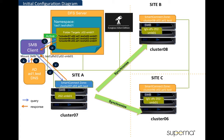Site A is the primary site. Site B and C are both secondary sites. There are 3 clusters: cluster 07, cluster 08, and cluster 06. Cluster 07 is on primary site A, cluster 08 is on secondary site B, and cluster 06 is on secondary site C. SyncIQ replications have been configured to replicate from A to B and also from A to C.